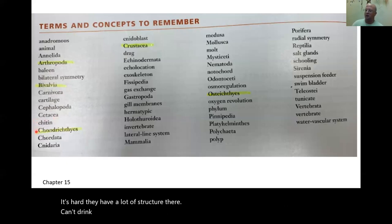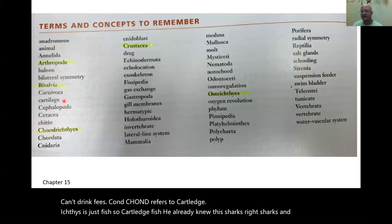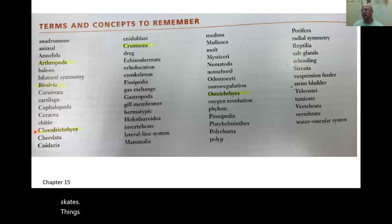Chondrichthyes — chond refers to cartilage, ichthyes is just fish. So cartilage fish. You already know this: sharks, rays, skates. Chondrichthyes have a cartilage skeleton. Sharks are a good example.